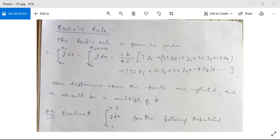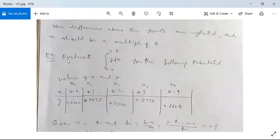And n should be a multiple of 4. The n number should be a multiple of 4. Let's take an example here.